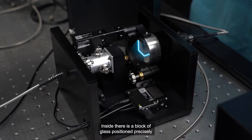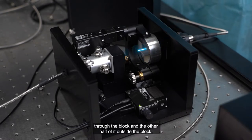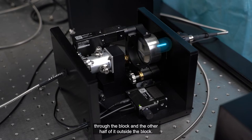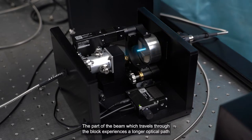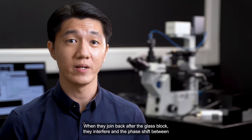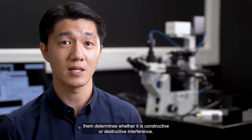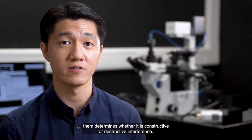Inside, there is a block of glass positioned precisely in such a way that half of the beam propagates through the block and the other half of it outside the block. The part of the beam which travels through the block experiences a longer optical path, and is therefore phase shifted compared to the other half. When they join back after the glass block, they interfere and the phase shift between them determines whether it is constructive or destructive interference.